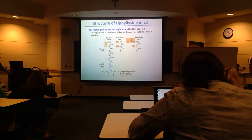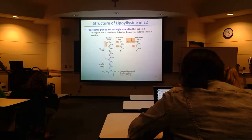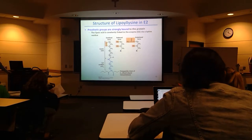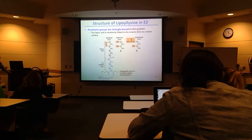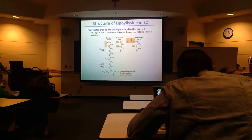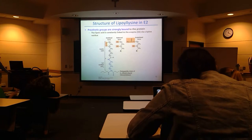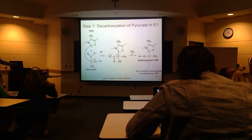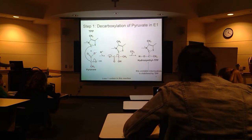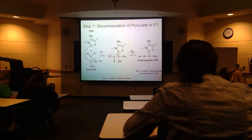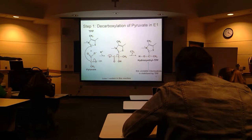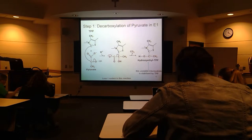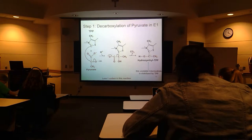Okay, so citric acid cycle — we're not quite there yet, but that's what we're talking about today. This is about getting into the citric acid cycle still. So we are in the pyruvate dehydrogenase context. Last time we talked about what happens when pyruvate comes in — we decarboxylate it, we produce CO2, and then we have our pyruvate linked to this TPP prosthetic group, the E1 enzyme.